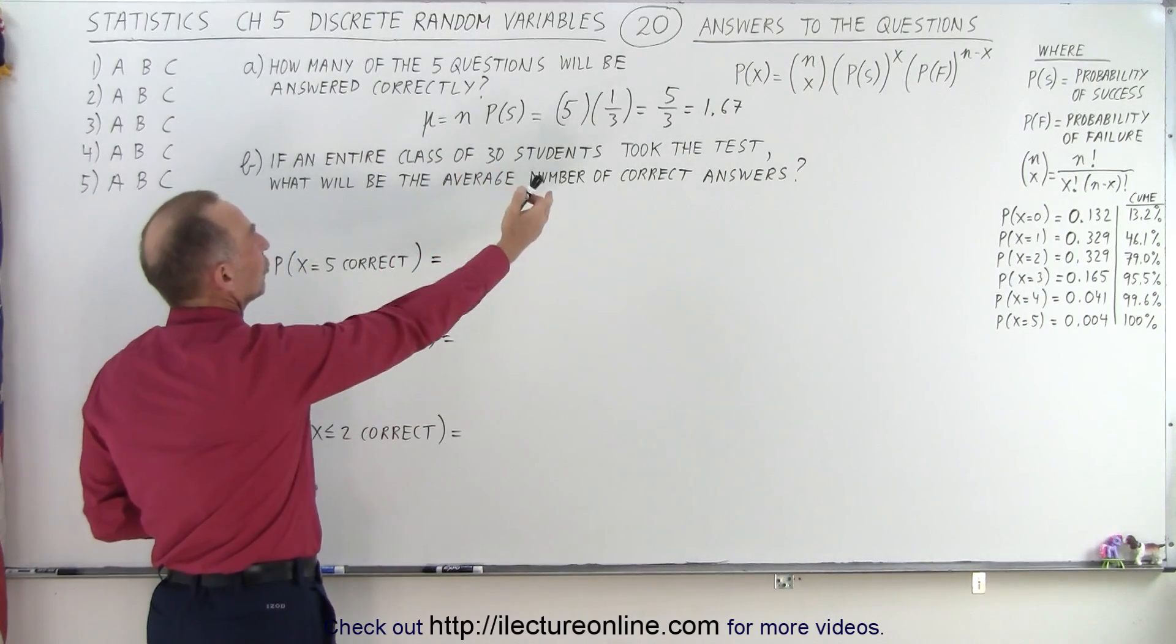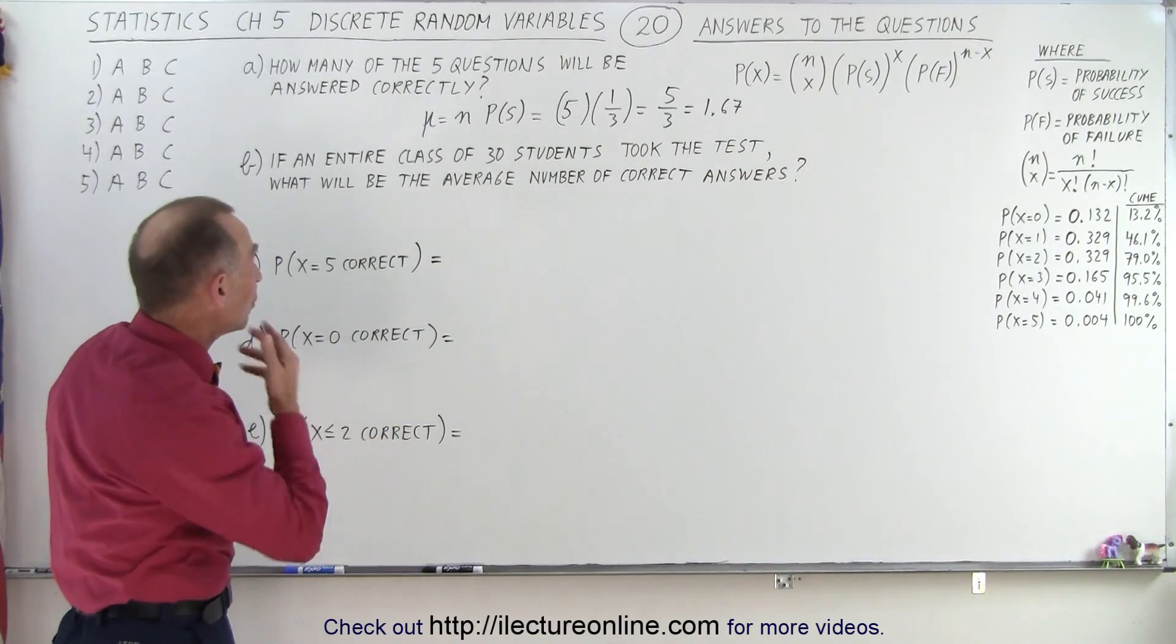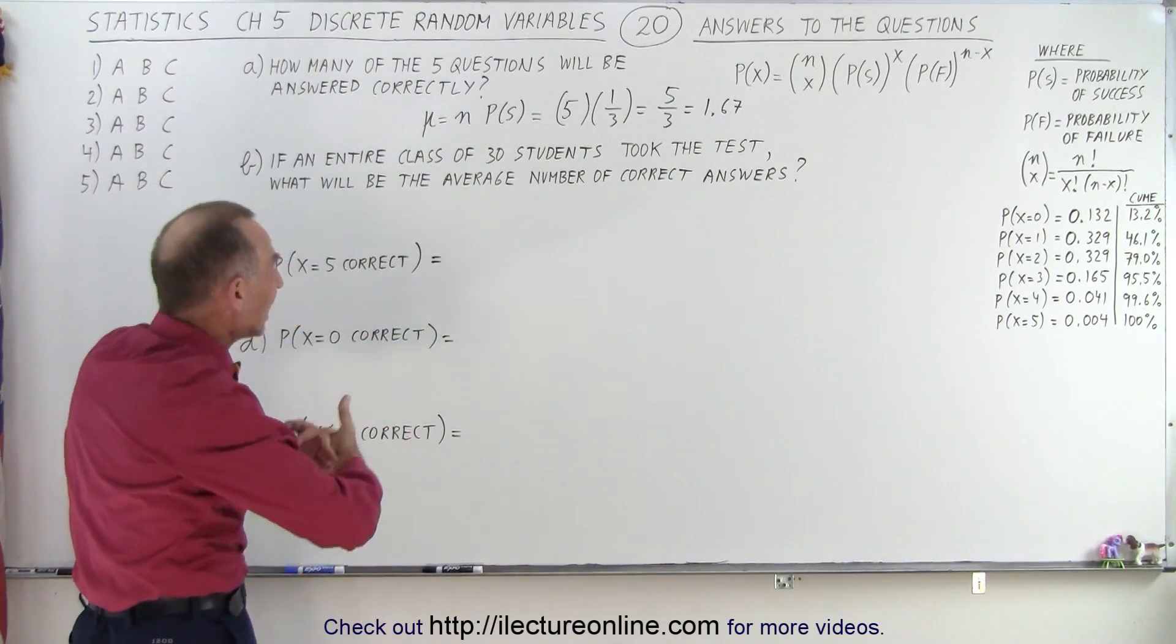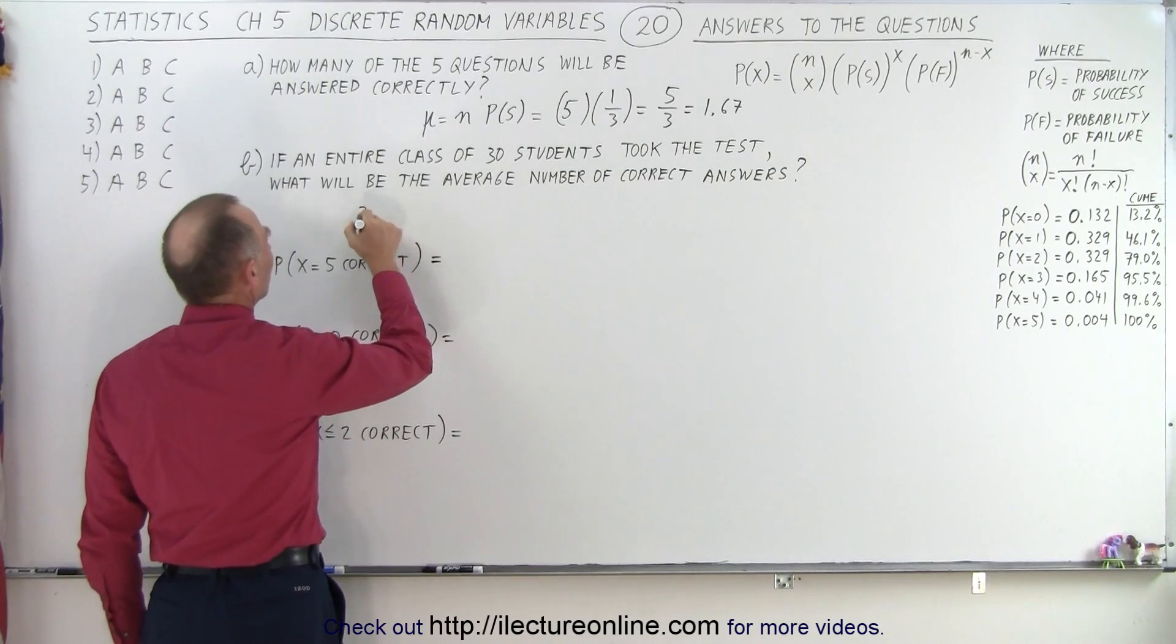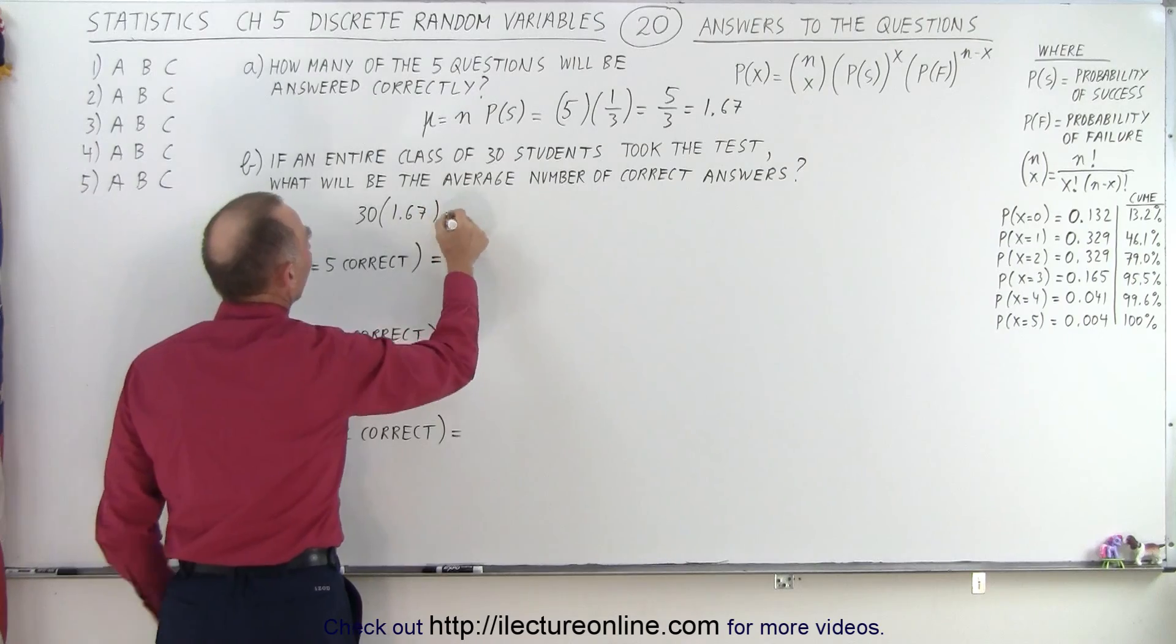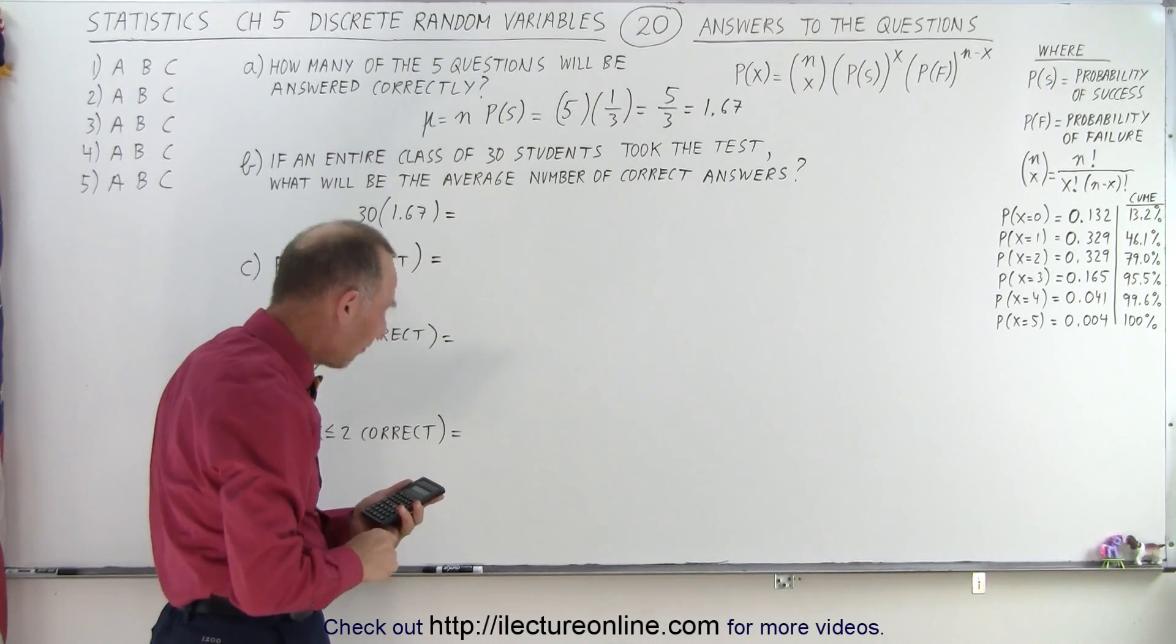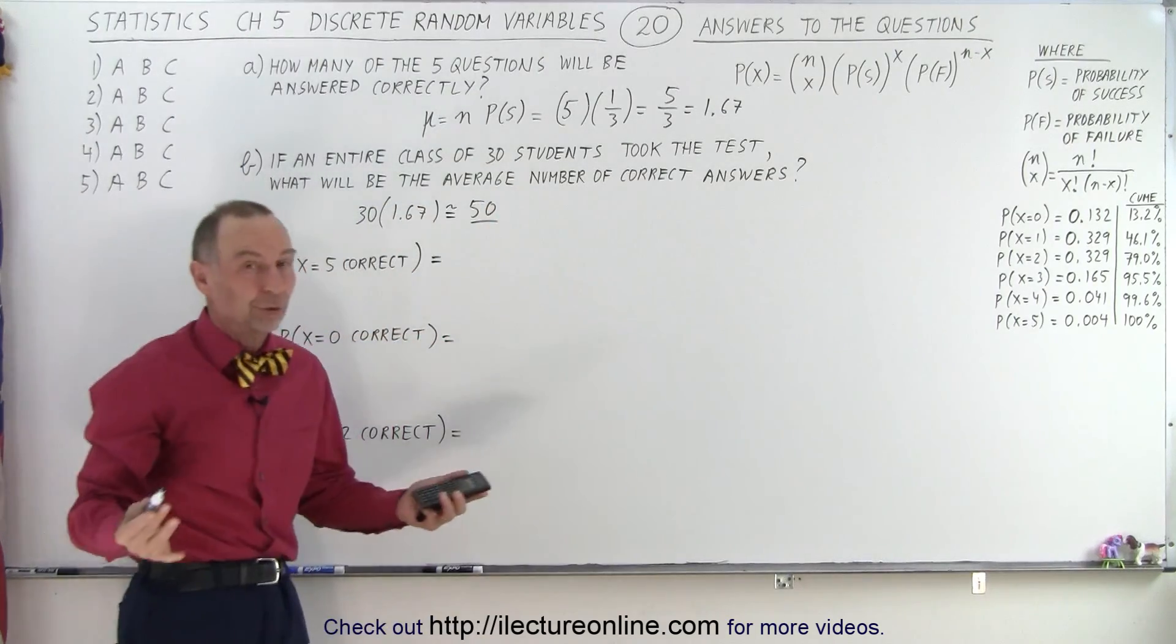And then of course if an entire class of 30 students took the same test under the same conditions, just purely guessing, then notice all we have to do is multiply this number right here times 30. And that would be the number of questions correct in a class of 30 students, probably the most likely scenario. So we have 30 times 1.67, and notice, so we have 1.67 times 30, that would be about 50.